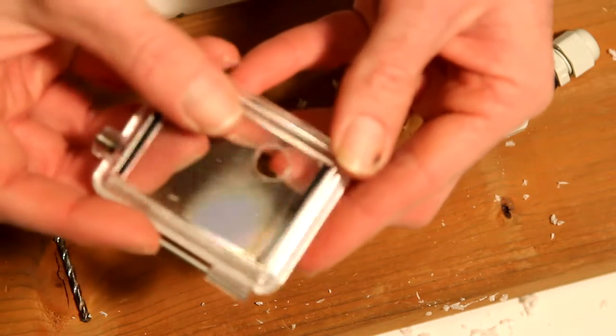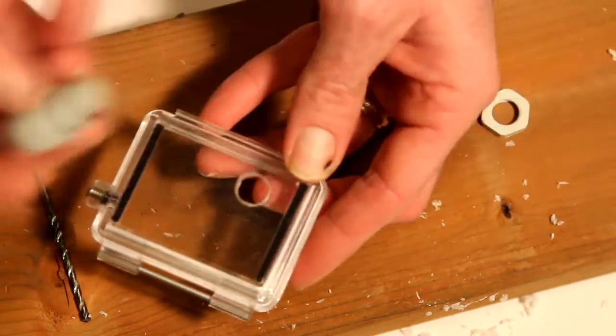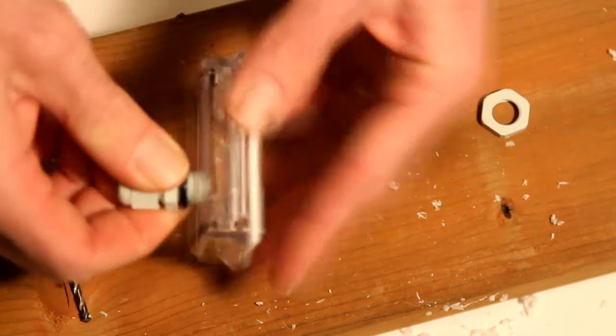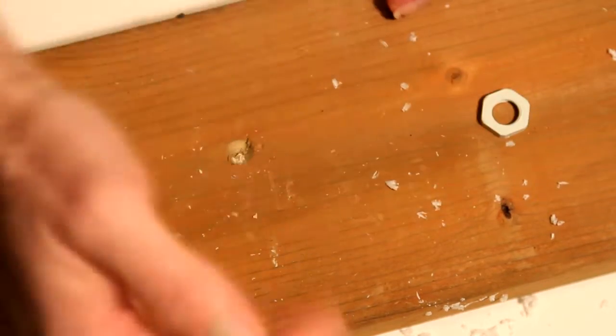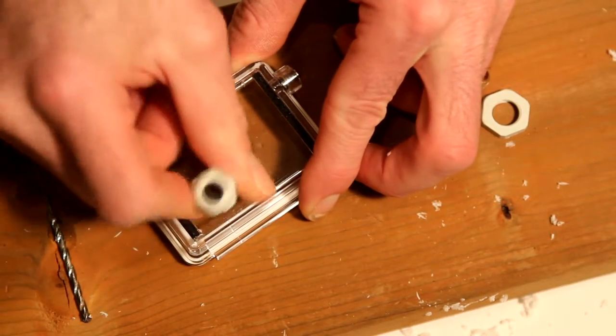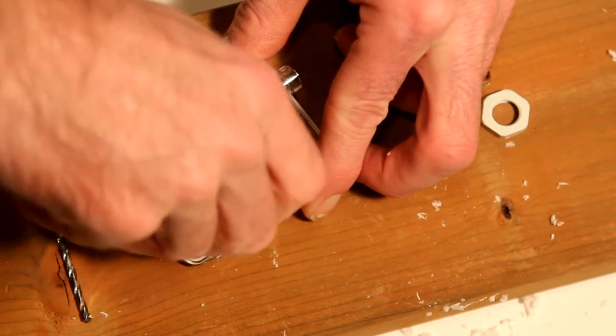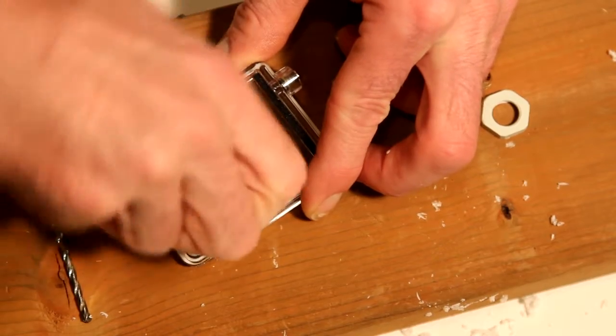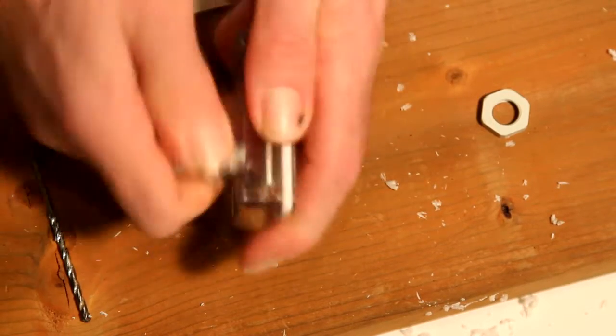I do it all with hand pressure. You could get it started with a pair of pliers if you like, but I find that hand pressure is as snug as you need it to be. You don't really want to over-tighten the cable gland because that could actually put too much stress on the O-ring and cause problems of its own.